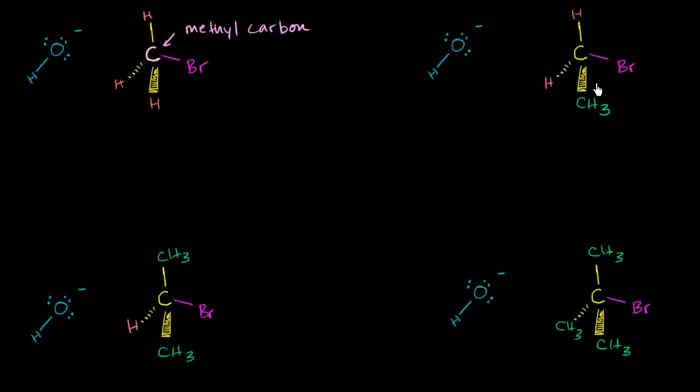Now let's think about this right over here. What's the difference between this scenario and that one? We still have our hydroxide anion, we still have the bromo group, but now this carbon is attached to another carbon. So this right over here is a primary carbon. It's attached to one other carbon.